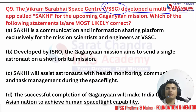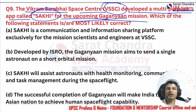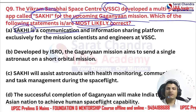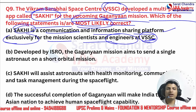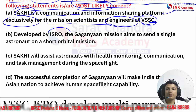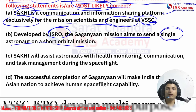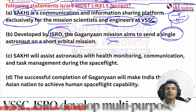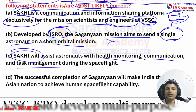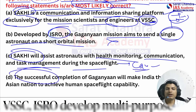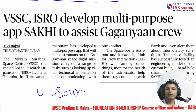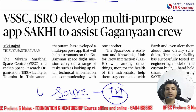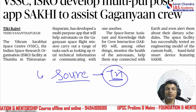Question nine: Vikram Sarabhai Space Centre developed a multi-purpose app called SAKHI for the upcoming Gaganyaan mission. Which statement is most likely correct? Statement one: it is a communication and information-sharing platform exclusively for mission scientists and engineers at VSSC. Statement two: the Gaganyaan mission aims to send a single astronaut on a short orbital mission — we know a team has been selected, so this is incorrect. Statement three: SAKHI will assist astronauts with health monitoring, communication, and task management during spaceflight — can be correct. Statement four: successful completion of Gaganyaan will make India the first Asian nation to achieve human spaceflight capacity — China is further ahead, so this can be incorrect.